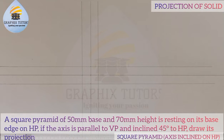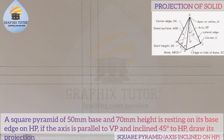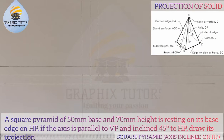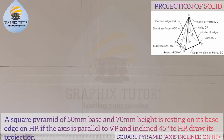If you look at the right-hand side of the screen you'll see a diagram showing a square pyramid. The difference between a pyramid and a cone is that the base of a cone is always circular, whereas the base of a pyramid can be any polygon — a triangle, square, hexagon, pentagon, and so on. Now we'll start drawing.